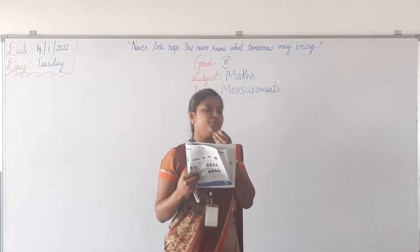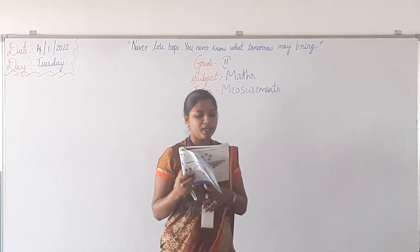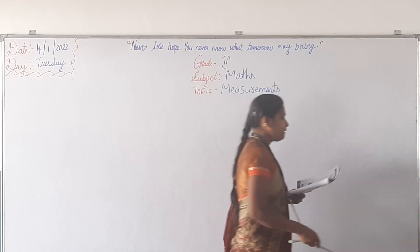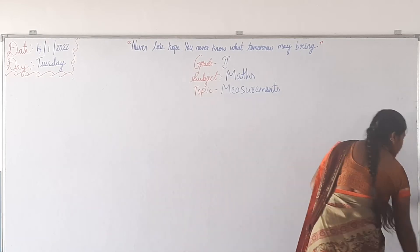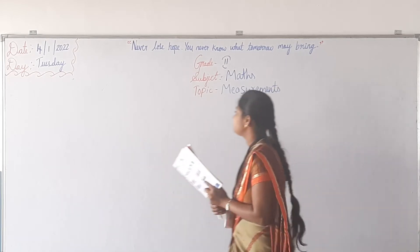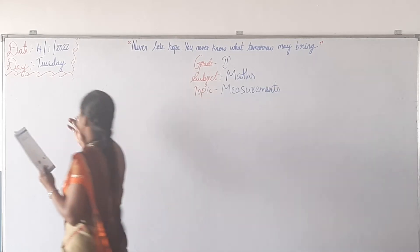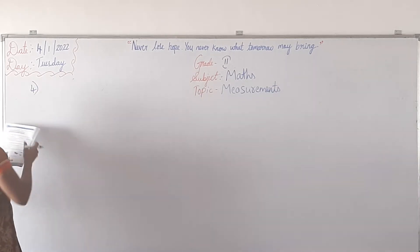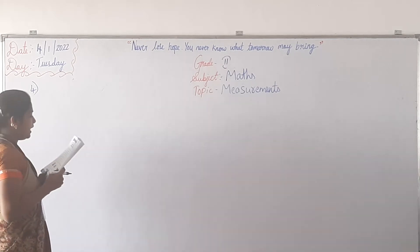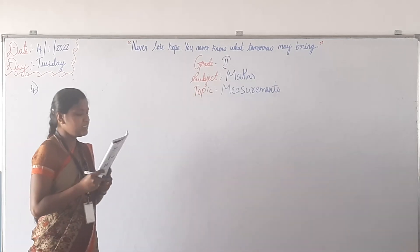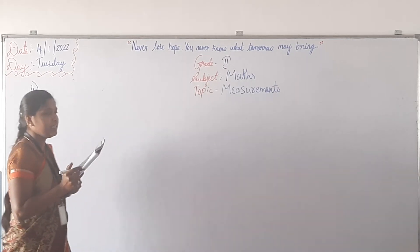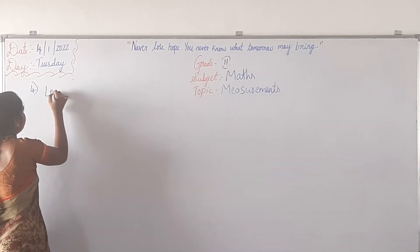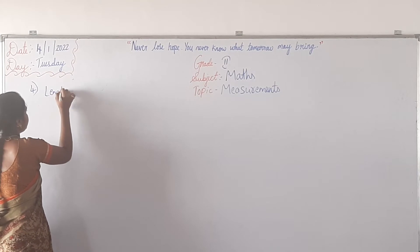So the third question you have to do for homework. Then see the fourth question. The length of a pencil is 7 cm. So what is the length of the pencil? 7 cm.